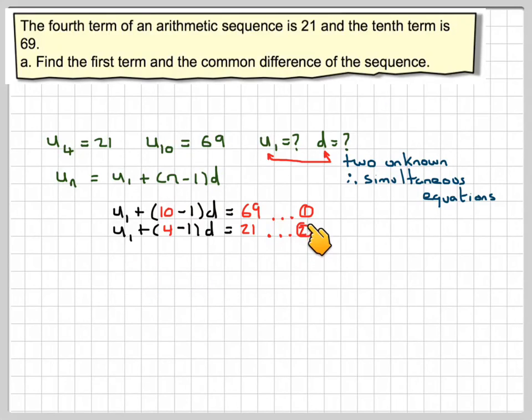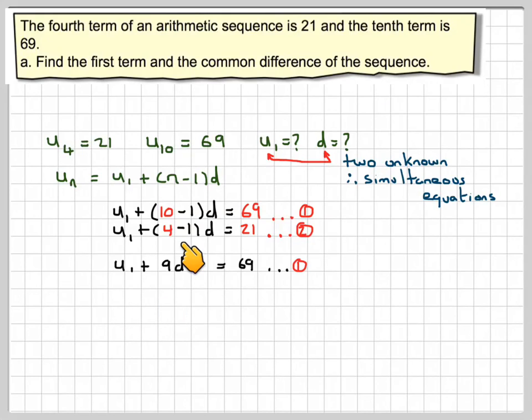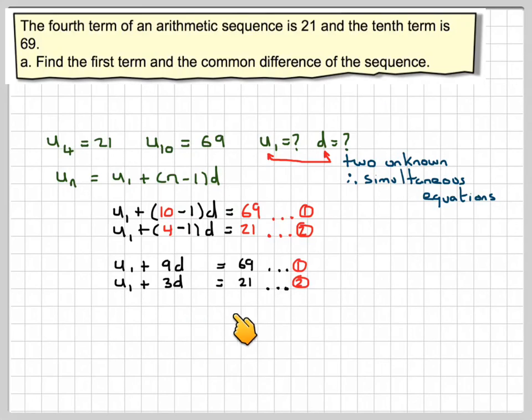Equation 1, equation 2. Simplifying them: we get U1 plus 9D equals 69, since 10 minus 1 is 9. And the second one, U1 plus 3D is equal to 21.